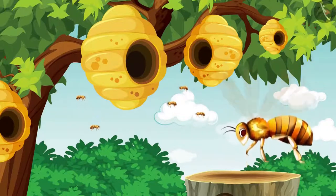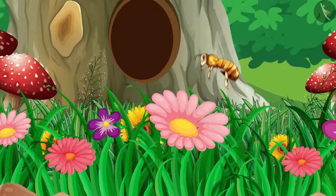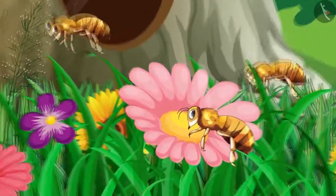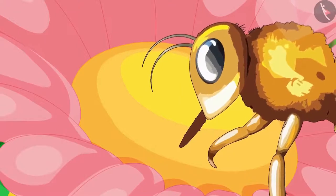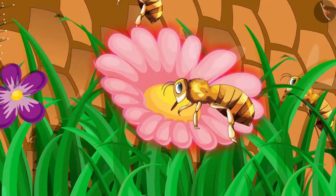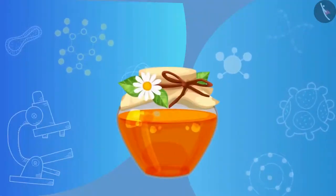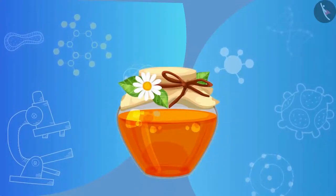Have you ever thought about how bees make honey? Bees sit on various flowers and absorb the nectar present in the flower. This nectar combines with the enzymes present in the mouth of bees, which makes honey. The quality of honey depends on the flowers available to the bees. Honey is beneficial for everyone — it contains nutrients and is rich in antioxidants.